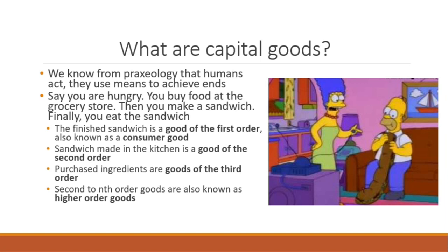The sandwich made in the kitchen is a good of the second order. There's a production process that goes into making the sandwich — you've got to combine the bread and the meat and the cheese. And in order to get those ingredients in the kitchen, you had to have bought them at the grocery store, so the purchased ingredients are goods of the third order. The second- to nth-order goods are known as higher-order goods. Higher-order goods produce goods of a lower order, and those lower-order goods eventually produce a consumer good.